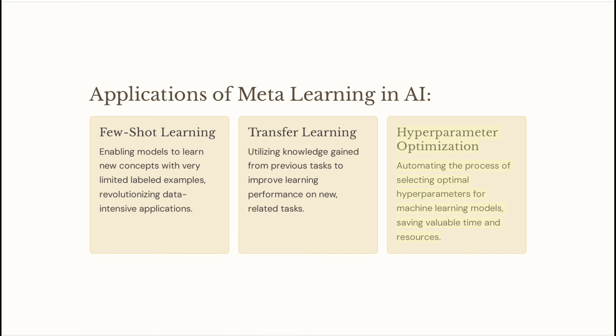Hyper-parameter optimization: automating the process of selecting optimal hyper-parameters for machine learning models, saving valuable time and resources.